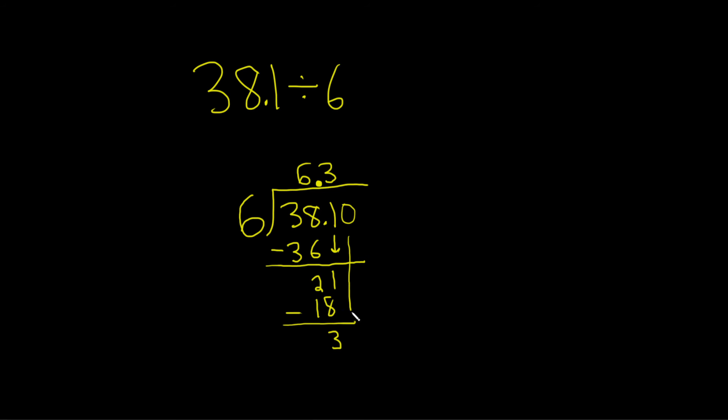Then you bring down the 0. Now to finish, we ask: how many times does 6 go into 30? 5 times. So 5 times 6 is 30. We subtract and get 0.